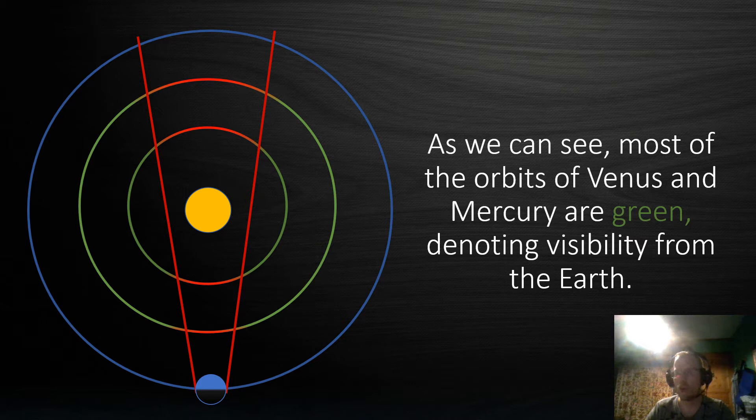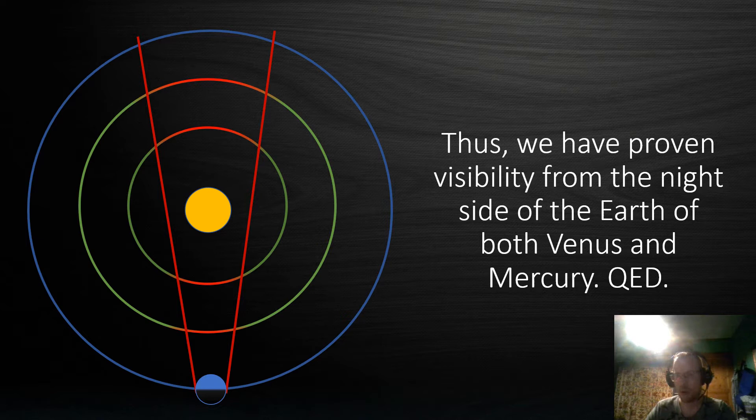As we can see most of the orbits of Venus and Mercury are green denoting visibility from the Earth. And thus with this diagram we have proven visibility from the night side of the Earth to both Venus and Mercury. Quod erat demonstratum.